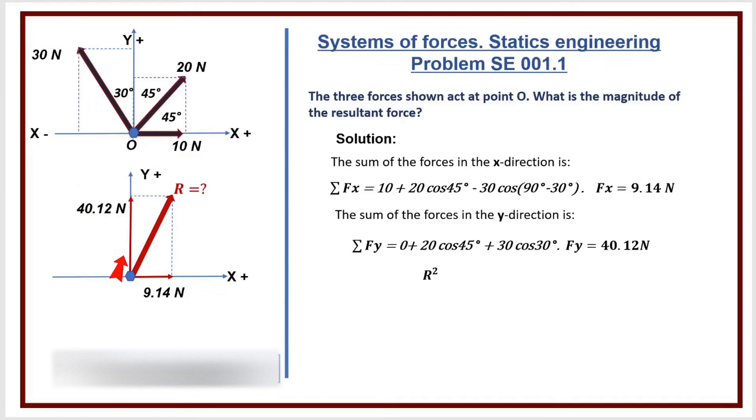R squared equals 9.14 squared plus 40.12 squared. R equals square root of 9.14 squared plus 40.12 squared. R equals 41.17 Newtons.